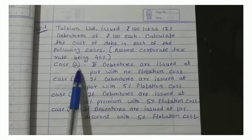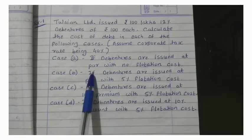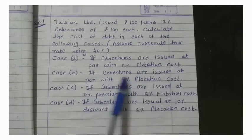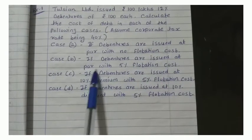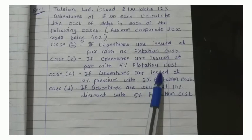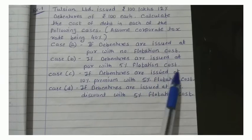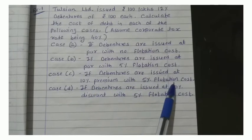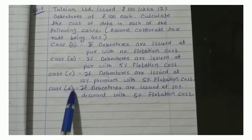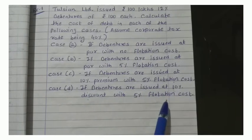Corporate tax rate is 40%. Case A: debentures are issued at par with no flotation cost. Case B: debentures are issued at par with 5% flotation cost. Case C: debentures are issued at 10% premium with 5% flotation cost. Case D: debentures are issued at 10% discount with 5% flotation cost.